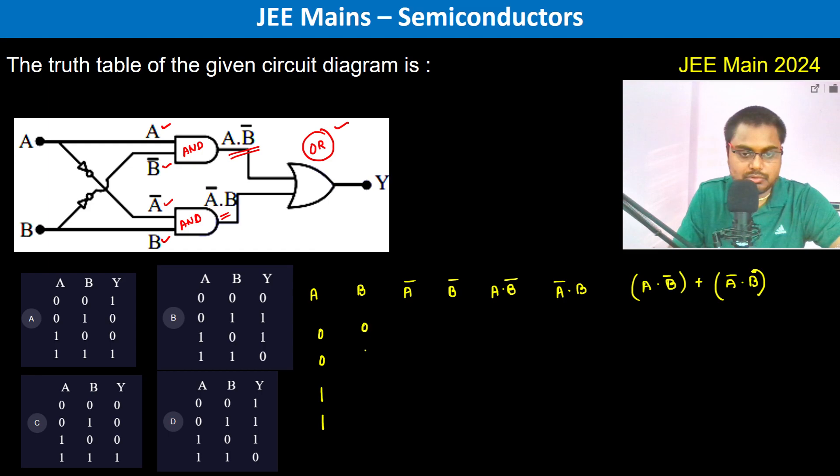Now let us calculate. So what is A bar? This is one one zero zero, because it's going to be NOT of A. So NOT of A is one. Now NOT of B is going to be one zero one zero.